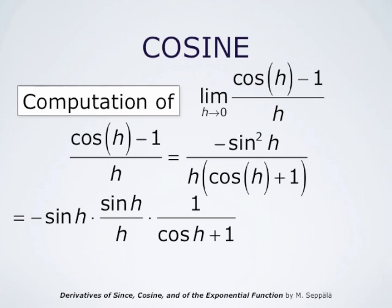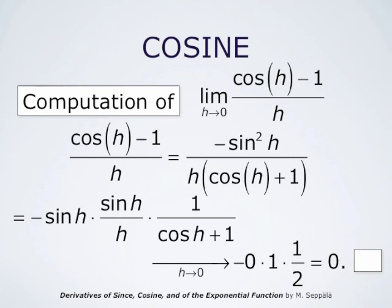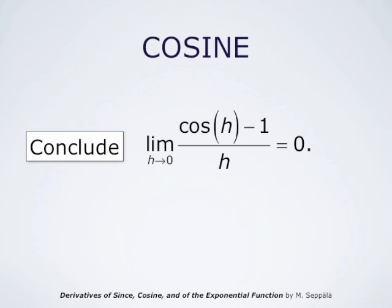The limit of sine of h as h goes to 0 is 0, and the limit of cosine of h as h goes to 0 is 1. Therefore the limit of the product is minus 0 times 1 times one-half, which is 0. So we have concluded that the limit of cosine of h minus 1 divided by h as h goes to 0 is 0 — a result needed just ahead.